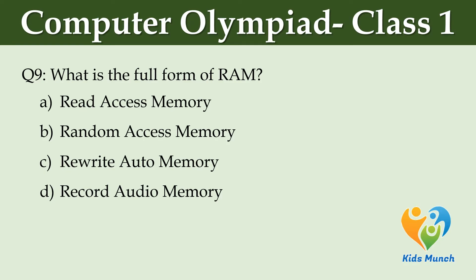What is the full form of RAM? Option A: Read Access Memory. Option B: Random Access Memory. Option C: Rewrite Auto Memory. Option D: Record Audio Memory.